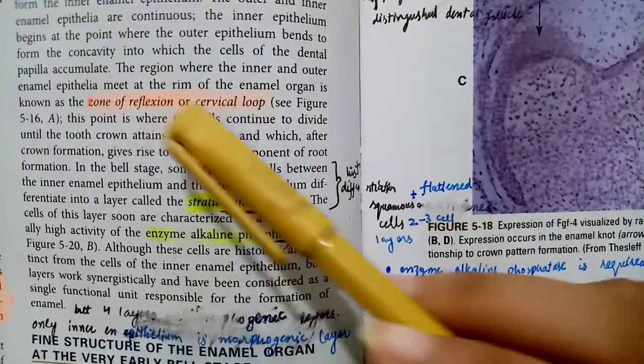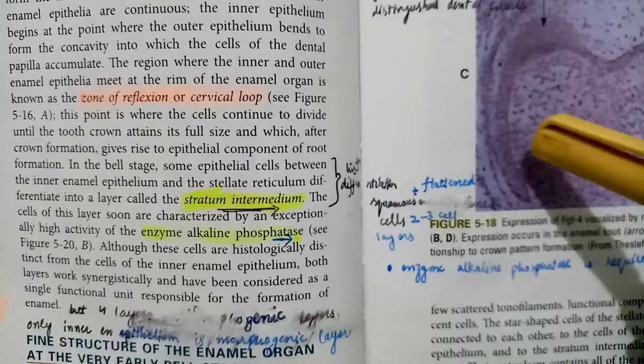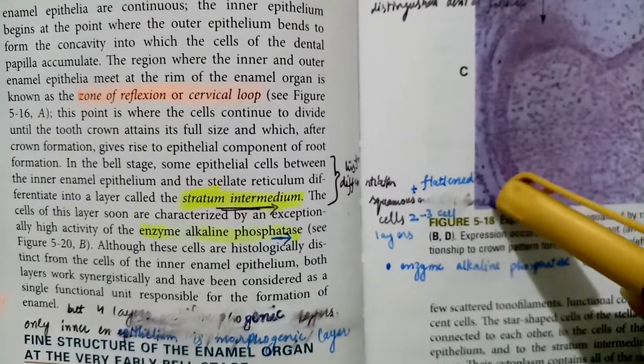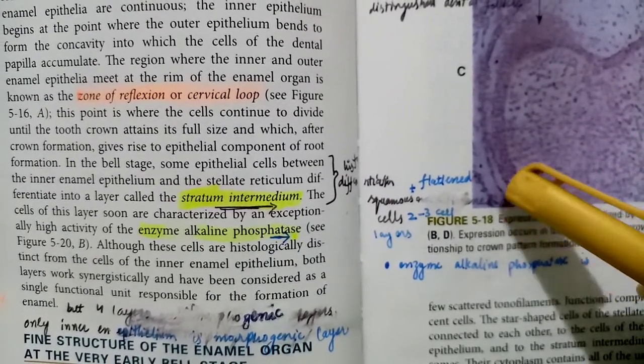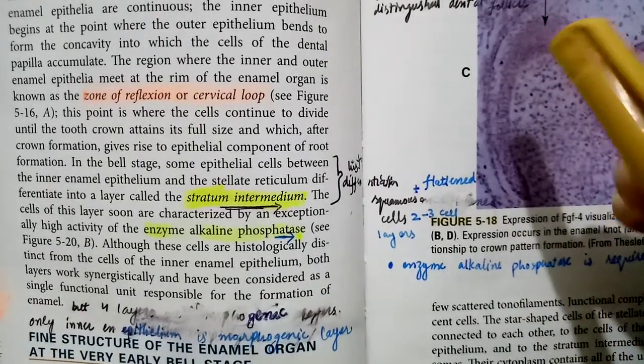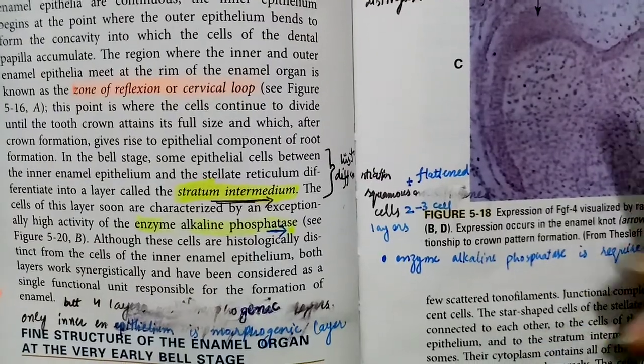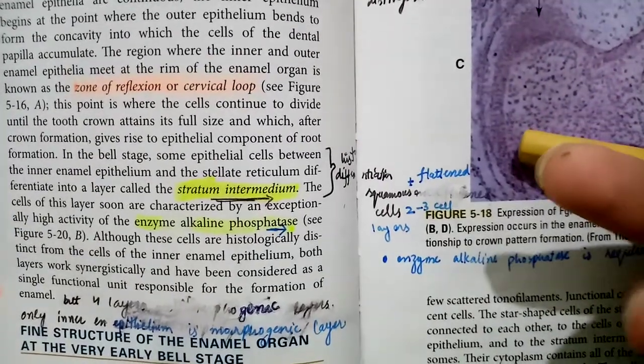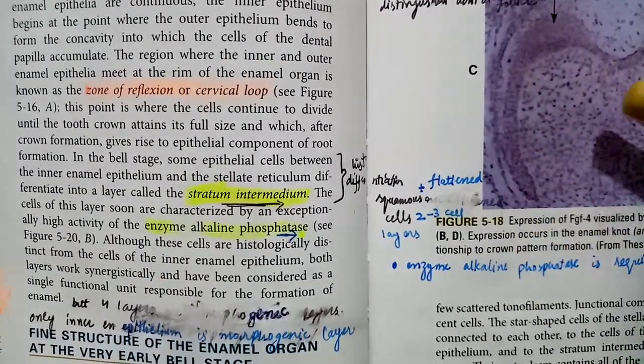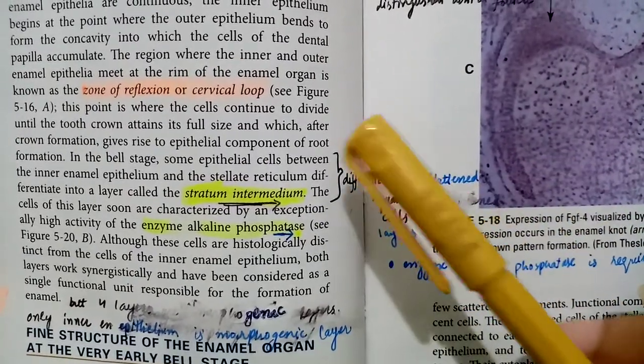This region is known as zone of reflection or cervical loop. This point is where the cells continue to divide. At this point, the cells continue to divide, and in this region they attain their full size, and after crown formation, this gives rise to epithelial component of root formation.